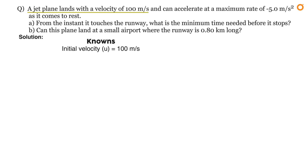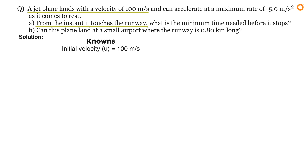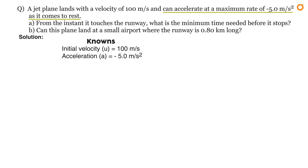How do we know it is an initial velocity? If you read carefully, you'll notice the line 'from the instant it touches the runway' — this means the problem is solved from the instant the jet plane touches the runway, not from when it was flying in the air, which makes 100 meters per second the initial velocity. The jet plane can accelerate at a maximum rate of minus 5.0 meters per second squared, so its acceleration equals minus 5.0 meters per second squared.